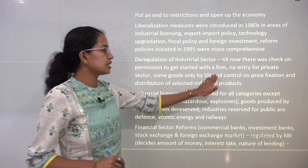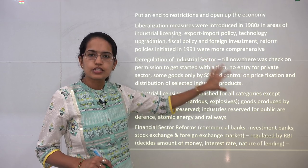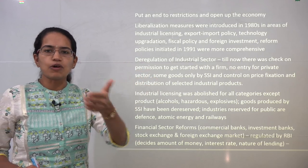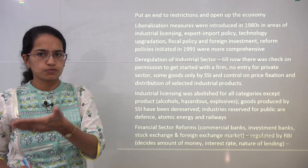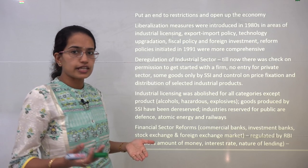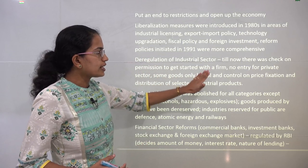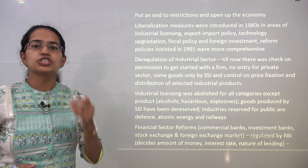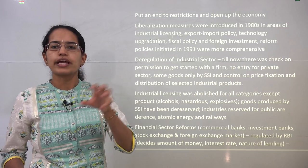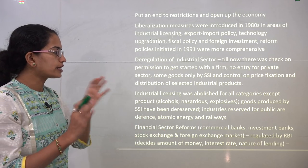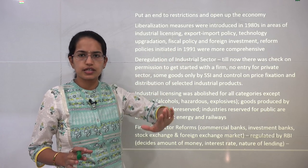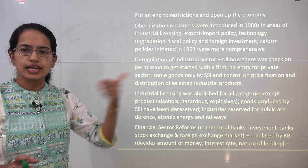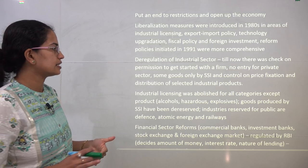All goods until then were reserved exclusively for small scale industries. From those reserved categories, some items were de-reserved from the small scale sector, which was again a big push. All kinds of industrial licensing were gradually abolished except for hazardous items like explosives and alcohol. Other items were removed from the licensing list.